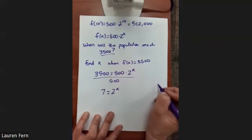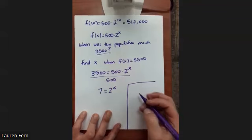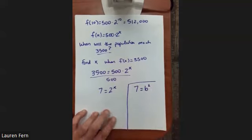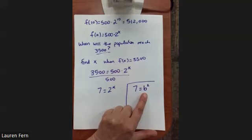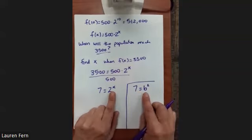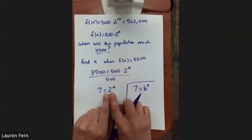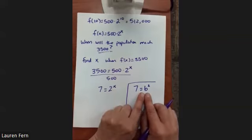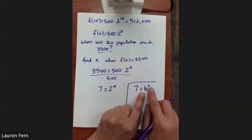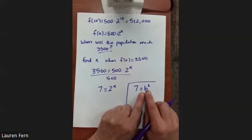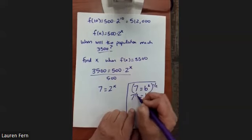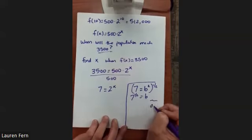Here's a contrast: if I were solving 7 = b², I have my exponent and I want to find my base — I'd raise both sides to the one-half power. But in our new situation, we have our base and we need to find our exponent. How do we get x all by itself out of the exponent?